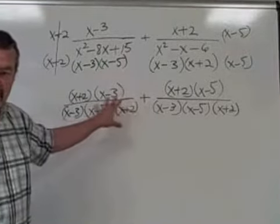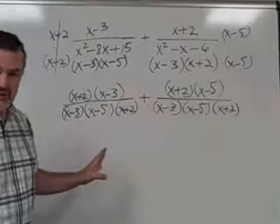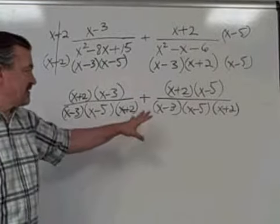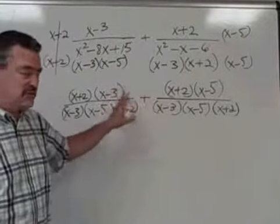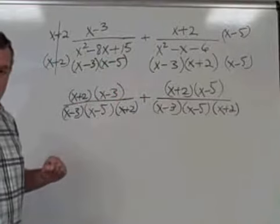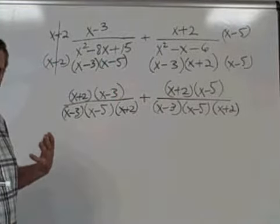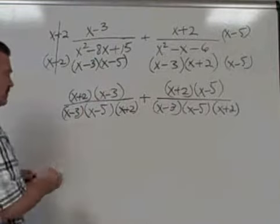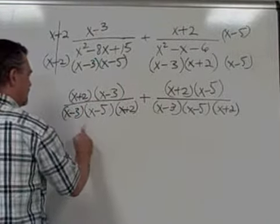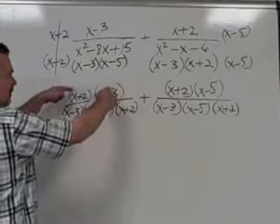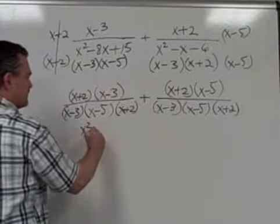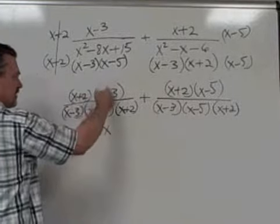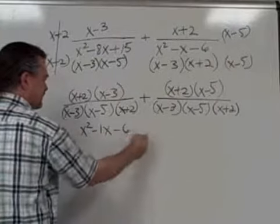Now we have to perform the multiplications before we can perform the addition of the fractions. Now that we have the same denominator, we'll want to add the numerators, but we can't do that until we perform those multiplications, which requires FOIL. Multiplying those binomials with FOIL, it's going to give you x squared minus 3x plus 2x is minus 1x, plus 2 minus 3 is minus 6.